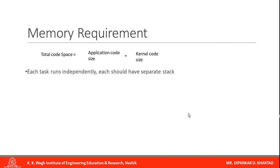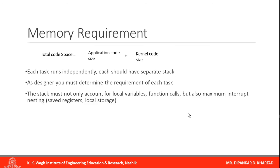Each task runs independently and should have a separate stack to store its register values. As a designer, you must determine the memory requirement of each task — how much memory it will use to save context or resume execution. The task must not only account for local variables and function calls but also for maximum interrupt nesting, which is needed to save and retrieve register and local storage data.